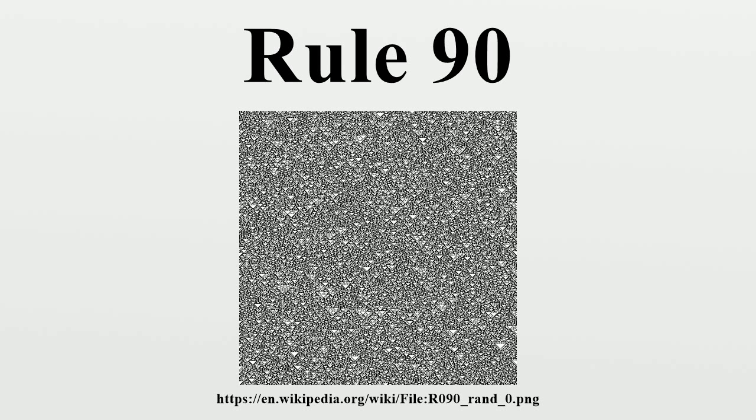The name of Rule 90 comes from Stephen Wolfram's binary decimal notation for one-dimensional cellular automaton rules. To calculate the notation for the rule, concatenate the new states in the rule table into a single binary number, and convert the number into decimal: 01011010 in binary equals 90 in decimal. Rule 90 has also been called the Sierpinski automaton, due to the characteristic Sierpinski triangle shape it generates, and the Martin-Odlyzko-Wolfram cellular automaton after the early research of Olivier Martin, Andrew M. Odlyzko, and Stephen Wolfram on this automaton.